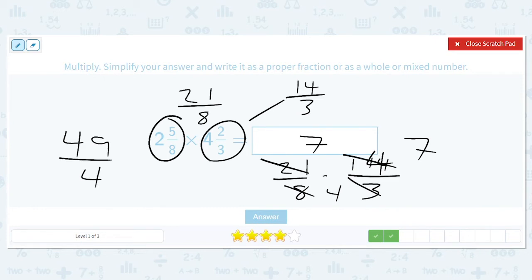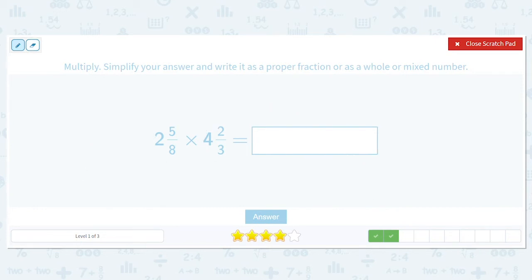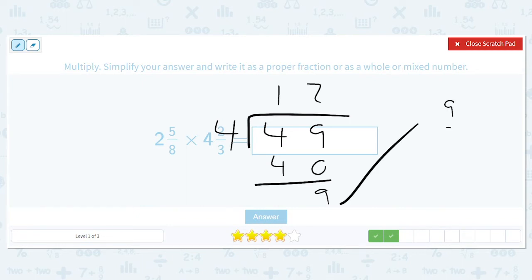Now how do we put this as an improper fraction? That was an improper fraction. So how do we put it as a mixed number? So we got 1 here, 4, 9 here, 2. I'm just moving this over because there's not space. So it'll be 12 and 1 fourth.